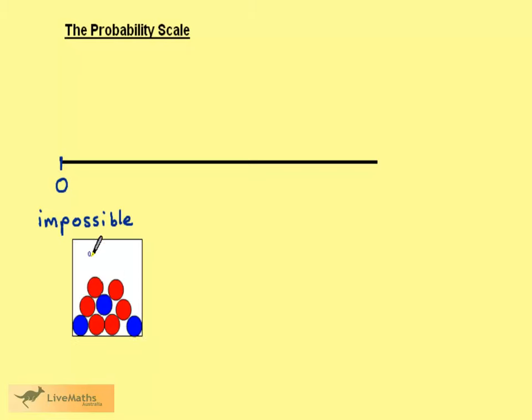To explain this concept further consider this box which contains red and blue balls. There are no balls of any other colour in the box.